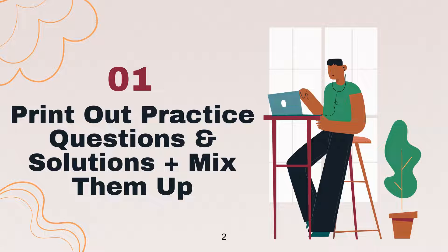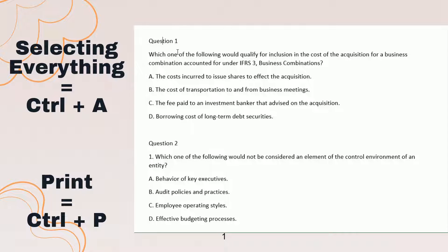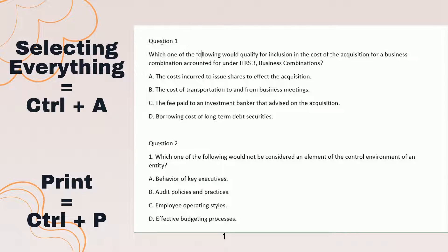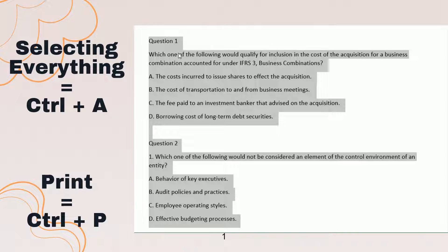In between all of those, you could always mix in the 75 multiple choice questions from the retired case. What I found with D2L is that sometimes it's finicky and doesn't let you print everything, so you can click on the text, press Ctrl+A to select everything, and then Ctrl+P to print.